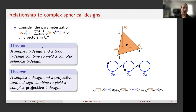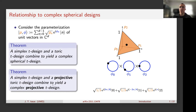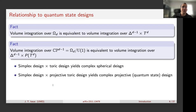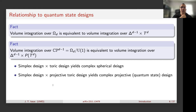If you take a simplex t-design and a toric t-design and combine them, you yield a complex spherical t-design. Similarly, a simplex design and a projective toric t-design combine to yield a complex projective t-design — a quantum state t-design. This was initially how we started thinking about projective toric t-designs: because of their relation to quantum state designs. The fundamental reason is that volume integration over the complex sphere is equivalent to volume integration over the simplex cross the torus, and similarly for complex projective space.